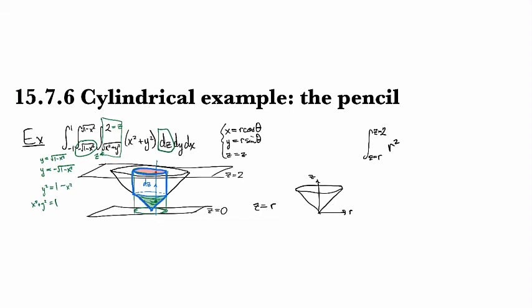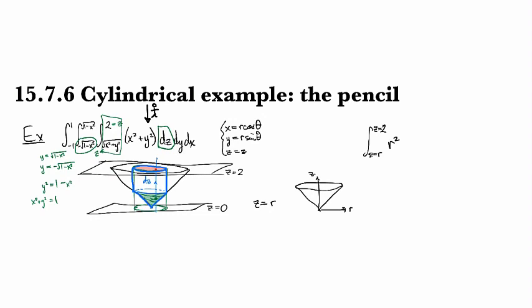Then this is going to project to this plane down here in the z equals zero, that's the shadow that's going to be cast by this thing after we integrate out in the dz direction. So we need to just set up that unit circle, so we're going to go from r equals zero to r equals one, and then this is going to go from theta equals zero to theta equals two pi.